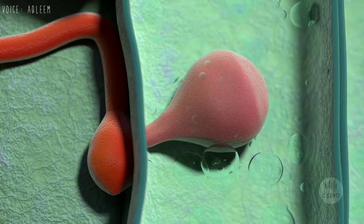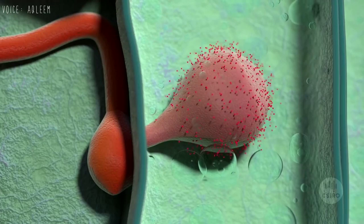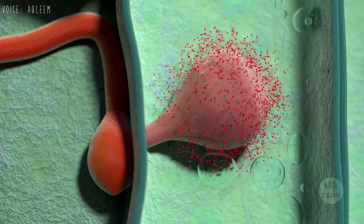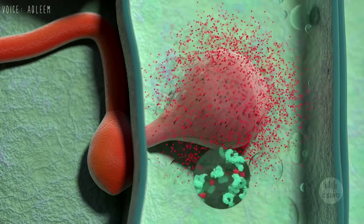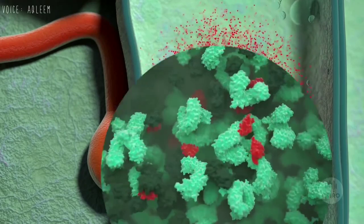It also creates small proteins called effectors. This is a critical time for the plant. If it can detect effector proteins, it can try to stop the invasion.